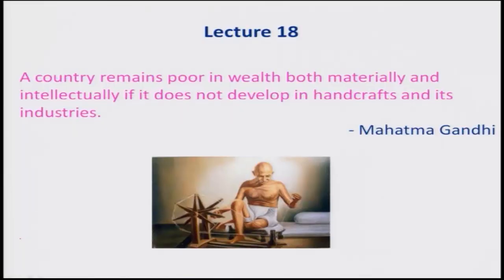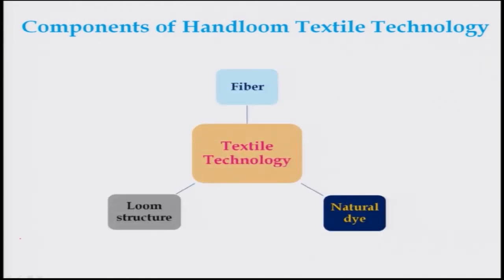Today we will be looking at basic processes involved in cotton making, or textile making. Handloom textile technology consists of three things: one is making of the fiber — how to make the fiber from the main ingredients, for example cotton, silk, linen, or jute. Then the question is how to weave it in the loom structure, and of course you will have to use dyes to have better color and attraction. These three components we will be discussing, starting with the fiber.